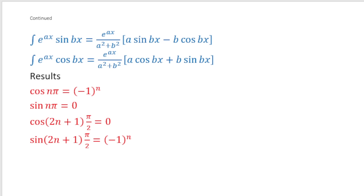Two more important integral results to use as formulas: ∫e^(ax)sin(bx)dx = e^(ax)/(a²+b²) · [a·sin(bx) − b·cos(bx)], and ∫e^(ax)cos(bx)dx = e^(ax)/(a²+b²) · [a·cos(bx) + b·sin(bx)]. These are very popular results you must have seen earlier.